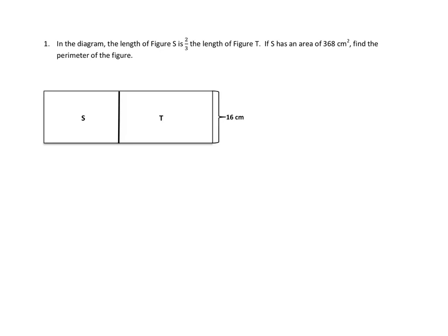I think I'm going to attack this problem this way. If I know the area of S and I know one of the lengths, then I can figure out what the other length is. I know that this is 16, so 16 times this length gives us an area of 368 square centimeters, so I can figure out the length of S. Once I've figured out the length of S, I know that that length is two-thirds of the length of T, so I can figure out the length of T. And once I have the length of S and the length of T, I can figure out the perimeter — it's just going to be this length twice, this length twice, plus this width twice. That'll be the perimeter. Let's get to it.